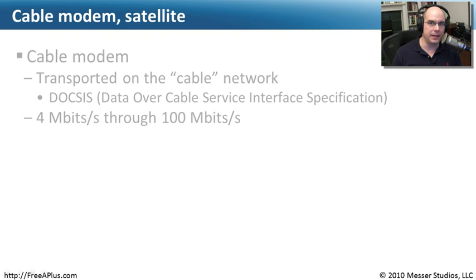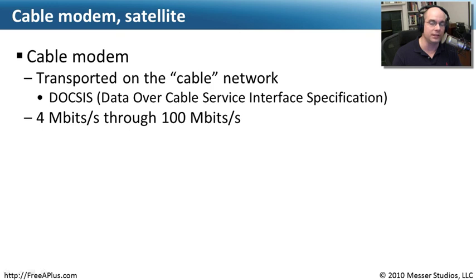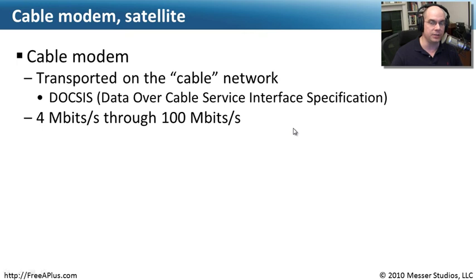One very fast type of network is a cable modem network, which delivers connectivity over your television cable. Your TV cable provides television, internet data, and can also provide voice. It uses a format called DOCSIS — Data Over Cable Service Interface Specification. As DOCSIS evolves through different versions, speeds get faster and faster. Today we see speeds ranging from 4 megabits per second up to 100 megabits per second on newer high-end DOCSIS networks, providing an always-on connection with very good bandwidth.